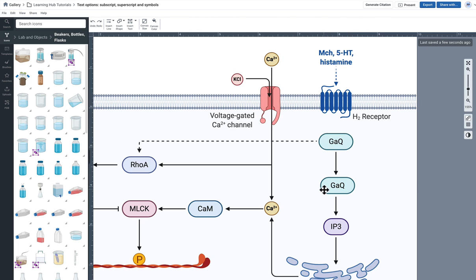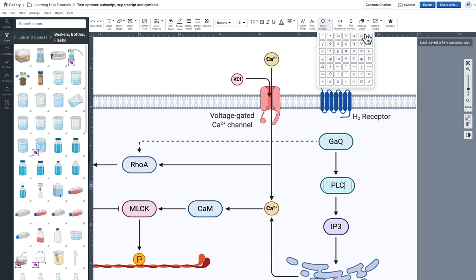So what I'm going to do is actually change this to PLC beta and as I'm typing you'll notice that this little insert symbol option pops up and I can actually then just navigate to the symbol that I need.